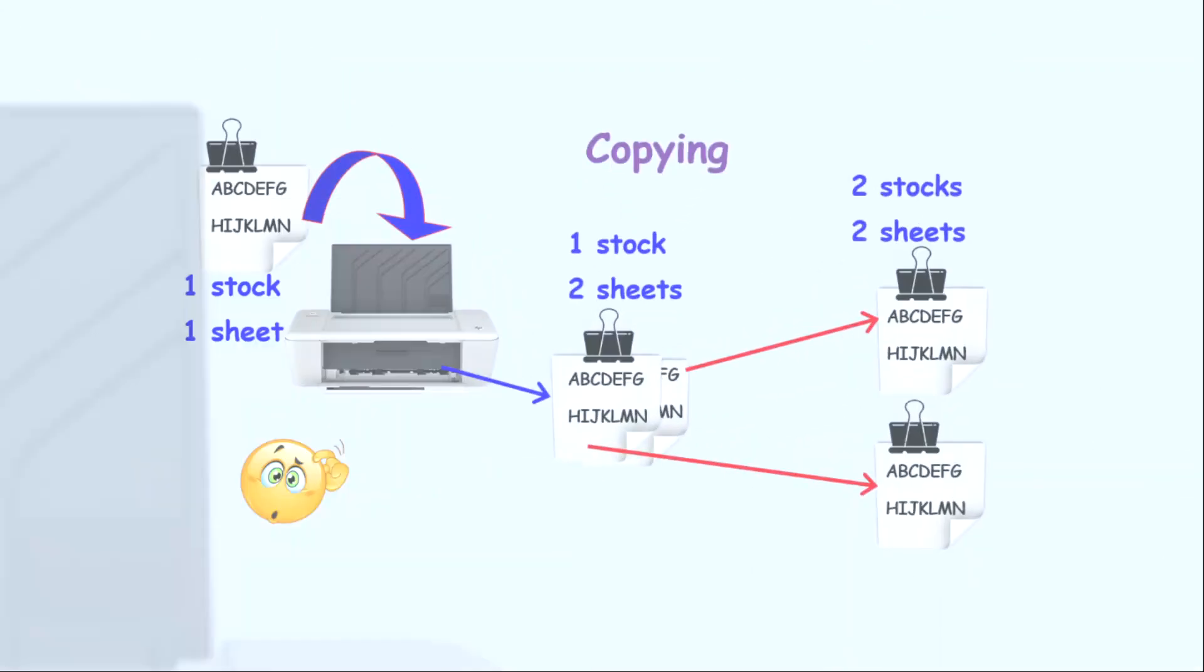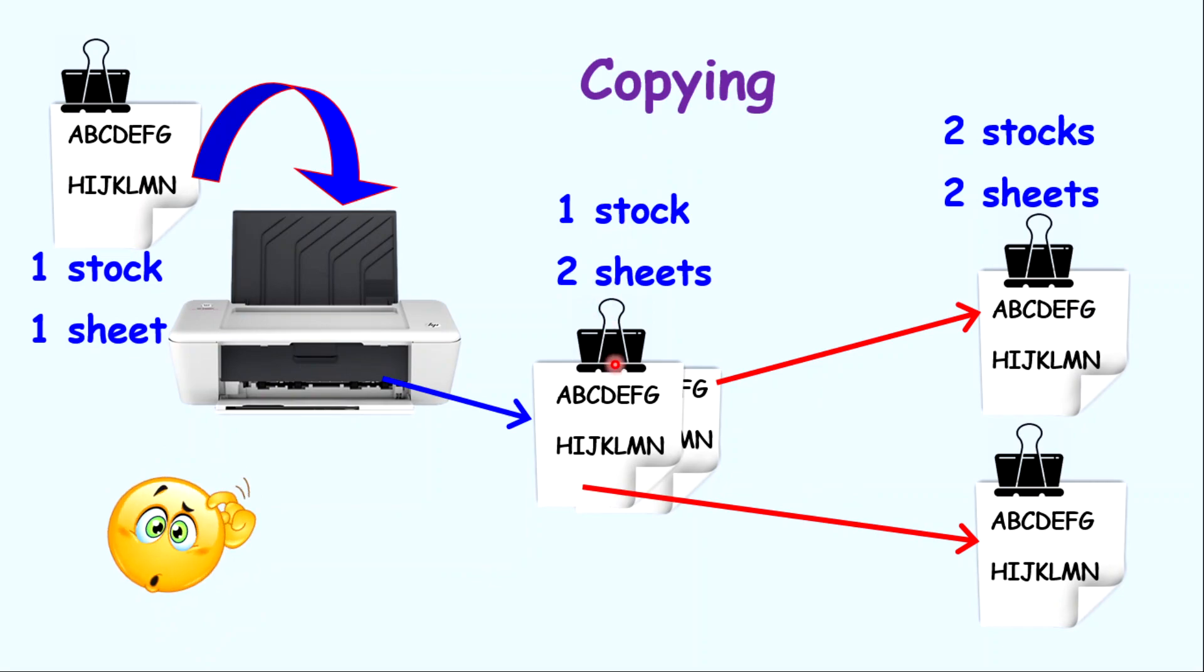Alternatively, you can decide to separate these two sheets of paper. But if you separate the sheets of paper, you want to keep them organized. Hence, each sheet must contain their own binder. So you could move from one stock with two sheets, separate the sheets, and to separate the sheets, you must apply two separate binders.